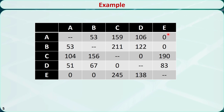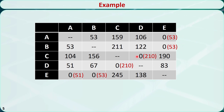For this zero, the minimum value other than itself in this row is 53, and the minimum value other than itself in this column is 0. We add them together, so the penalty is 53. Now let's do this for all other zeros. The largest penalty is associated with this zero and this zero. Because they are the same, we can randomly pick one — I just pick this one.